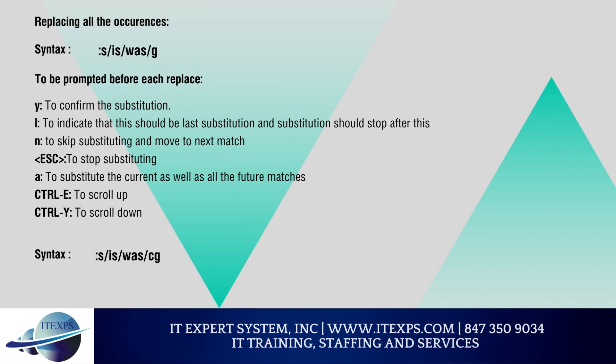Replacing all occurrences: Use the G (global) flag — :s/is/was/g — to replace all matching strings in the current line. To be prompted before each replacement, use the C flag: :s/is/was/cg. The matched string will be highlighted and you will be presented with options: Y to confirm, L for last substitution, N to skip, Escape to stop, A to substitute current and all future matches, Ctrl E to scroll up, Ctrl Y to scroll down.